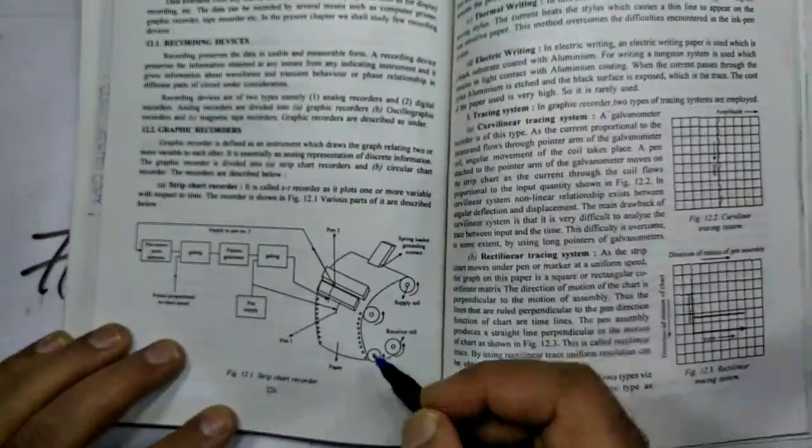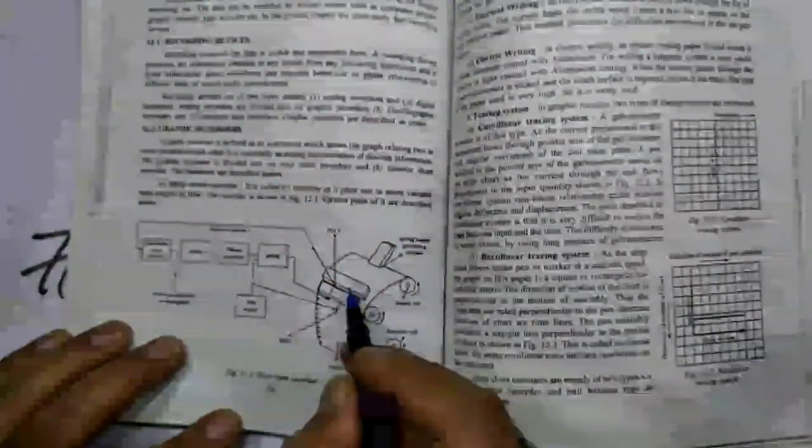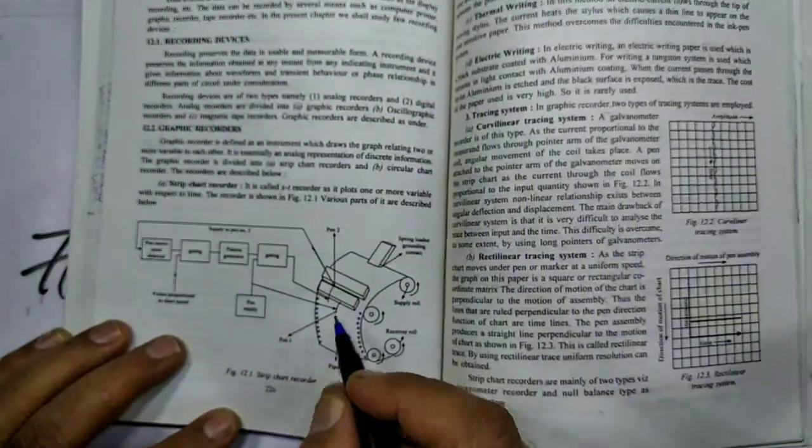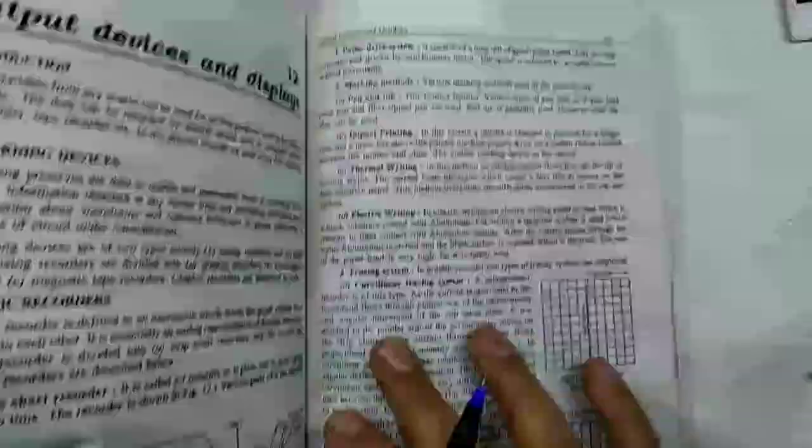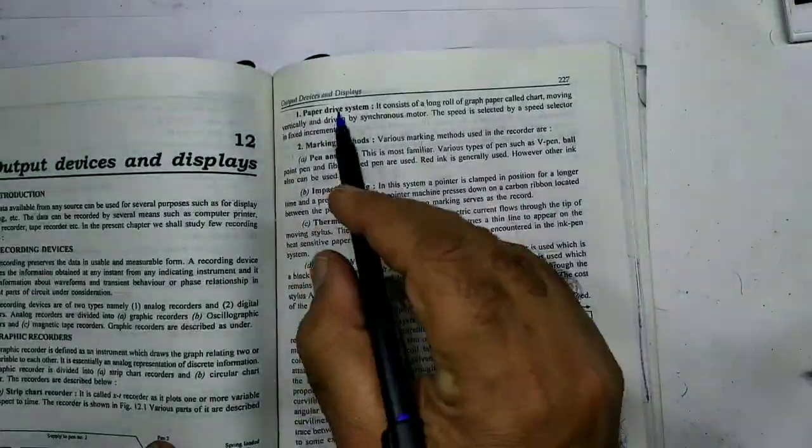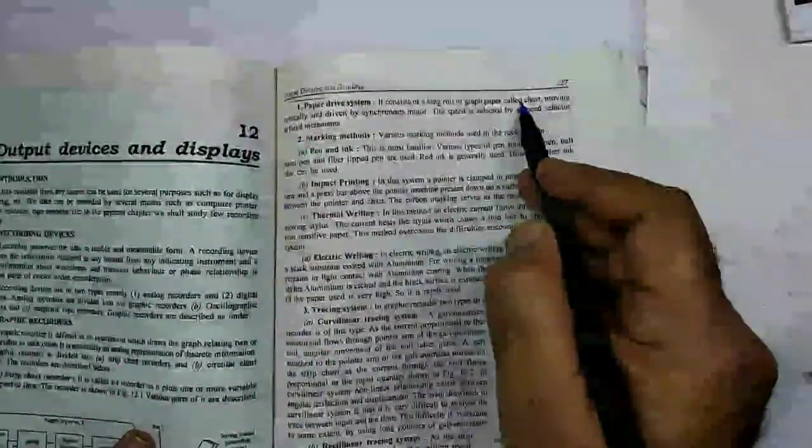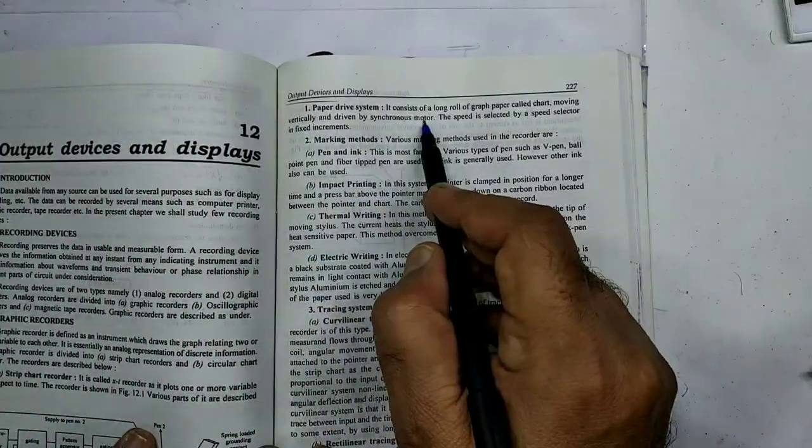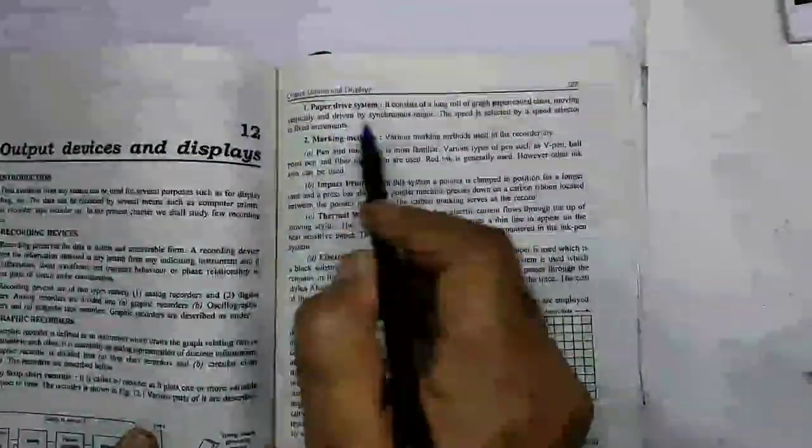Now here, this is called a strip chart which gets a record of the particular parameter which changes according to the system output. First one is the pen drive system. It consists of a long roll of graph paper called chart moving vertically and driven by a synchronous motor. The speed is selected by a speed selector in fixed increments.